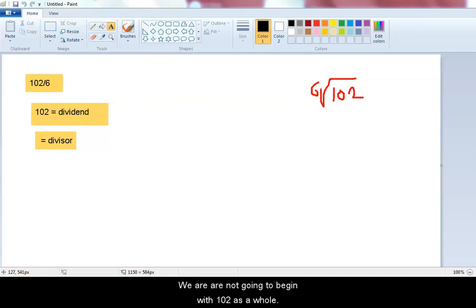We are not going to begin with 102 as a whole. We are not going to say 6 into 102. That will be a very big value and it is going to be difficult to bring out the result as quickly as possible.